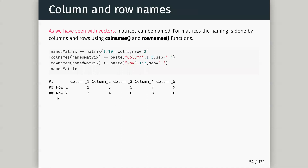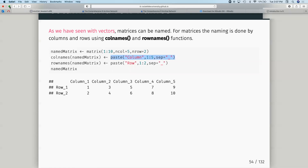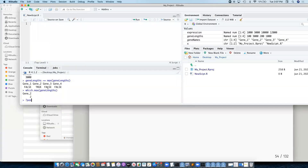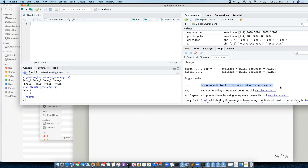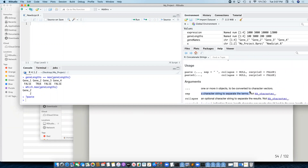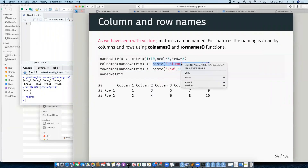We saw that cbind and rbind automatically assign some row names and column names. Just as we can assign names to vectors, we can do the same here. Once we've created our matrix, I can use the colnames function — as opposed to the names function — and assign some new names which I'm creating using the paste function.